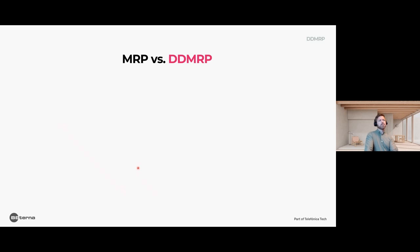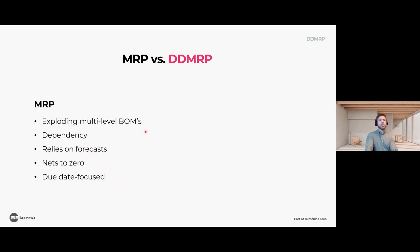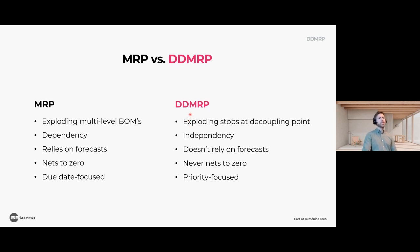Let's recap how DD MRP differs from MRP. MRP explodes the bill of materials all the way down, creating full dependency. It relies on forecasts, always nets to zero, and is quite due-date focused — the output is basically a bunch of dates. DD MRP, on the other hand, also explodes but the exploding stops at each decoupling point, creating independency in the supply chain. DD MRP doesn't rely on forecast in the same way — order generation comes from known information. It never nets to zero, and the output now has a priority dimension to it.